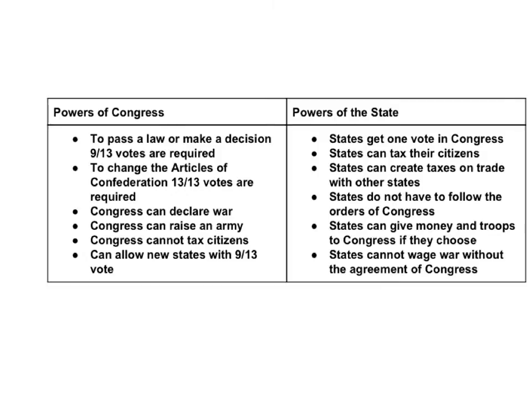And if they want to change the Articles, they're going to have to have a unanimous vote of 13 out of 13. I explain that Congress can declare war and raise an army, but they have to get those troops from individual states. They cannot tax citizens — they have to get money from each state, so states have to be willing to donate that money. And to allow a new state to join the Confederacy, they need a 9 out of 13 vote.